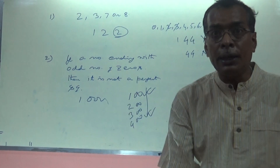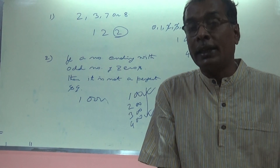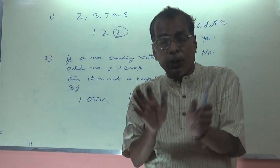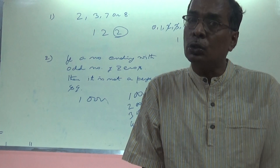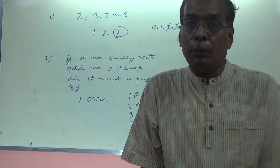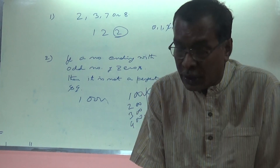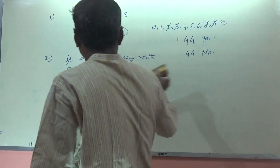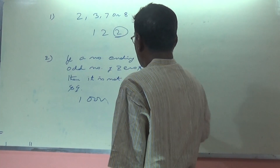Similarly, if a number ends with an even number of zeros, it does not always mean it is a perfect square. If it ends with an odd number of zeros, it is definitely not a perfect square. But if it ends with an even number of zeros, it may or may not be — we cannot be sure. This concludes rule number two. Now the third rule — a common sense rule.